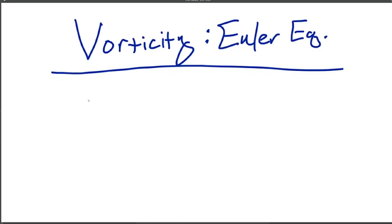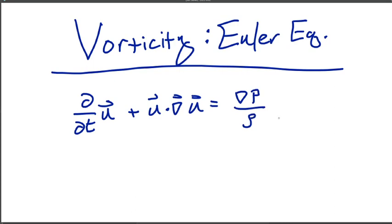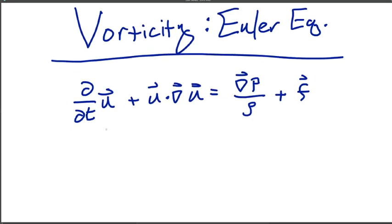We're going to start with d by dt of the velocity u plus the u·grad on u, our advection term, which is equal to the gradient of pressure over some density, and will include some general body force f. We've made no incompressibility assumptions or anything else. This is valid for compressible flow, but we have neglected viscosity. So this is our Euler equation.